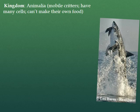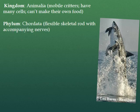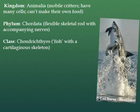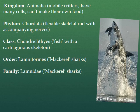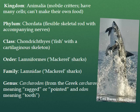For example, we have this pinnacle of an organism right here — a great white shark. The kingdom is Animalia, which are mobile critters that cannot make their own food and are comprised of many cells. The phylum is Chordata, corresponding with any organism that has a skeletal rod — a spinal column — along with accompanying nerves. The class is Chondrichthyes — a fish with a cartilaginous skeleton, not entirely made of bone. The order is Lamniformes, which are the mackerel or torpedo-shaped sharks. The family, likewise, is Lamnidae, corresponding to the body shape. The genus is Carcharodon, coming from the Greek word karcharos, meaning ragged or pointed, and odon, meaning tooth. And the species is carcharias, which is the Greek word for shark. So Carcharodon carcharias, or great white shark, in Latin simply means ragged or pointed tooth shark.